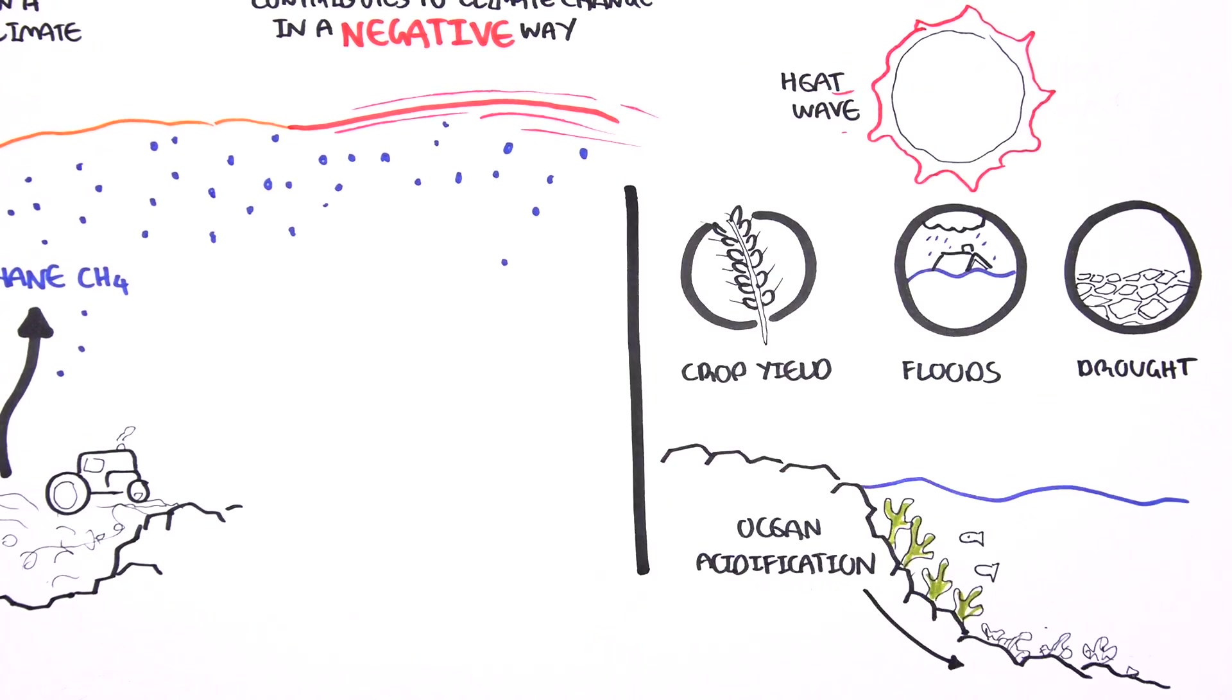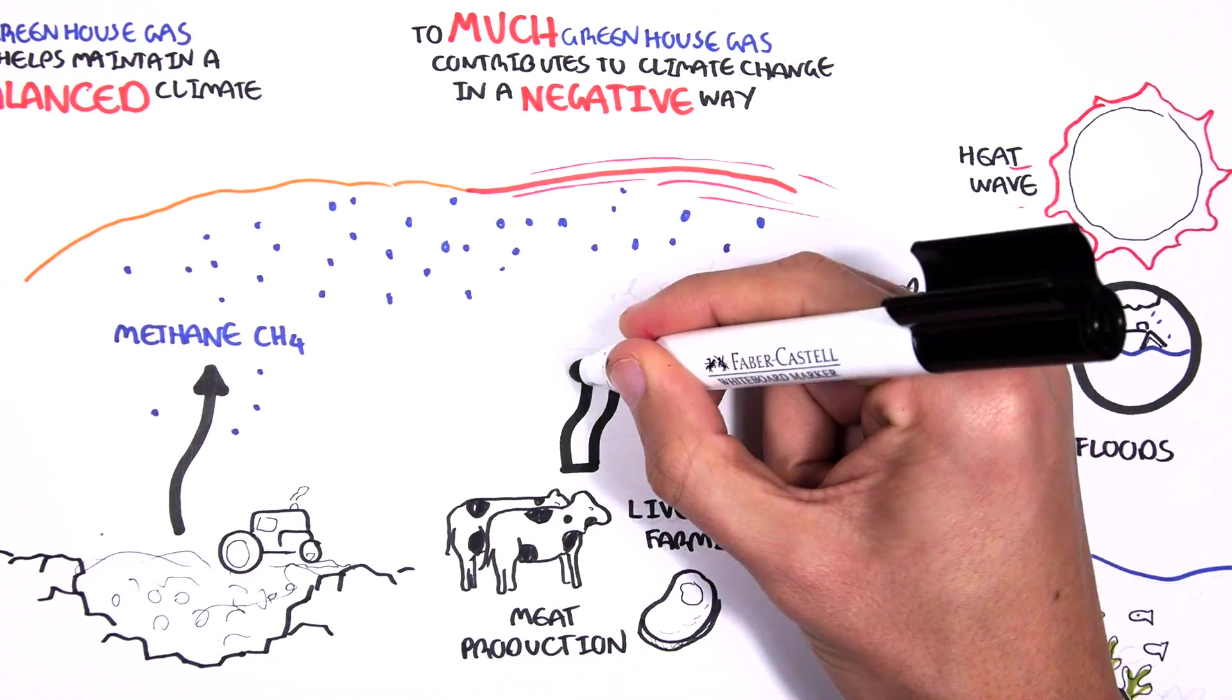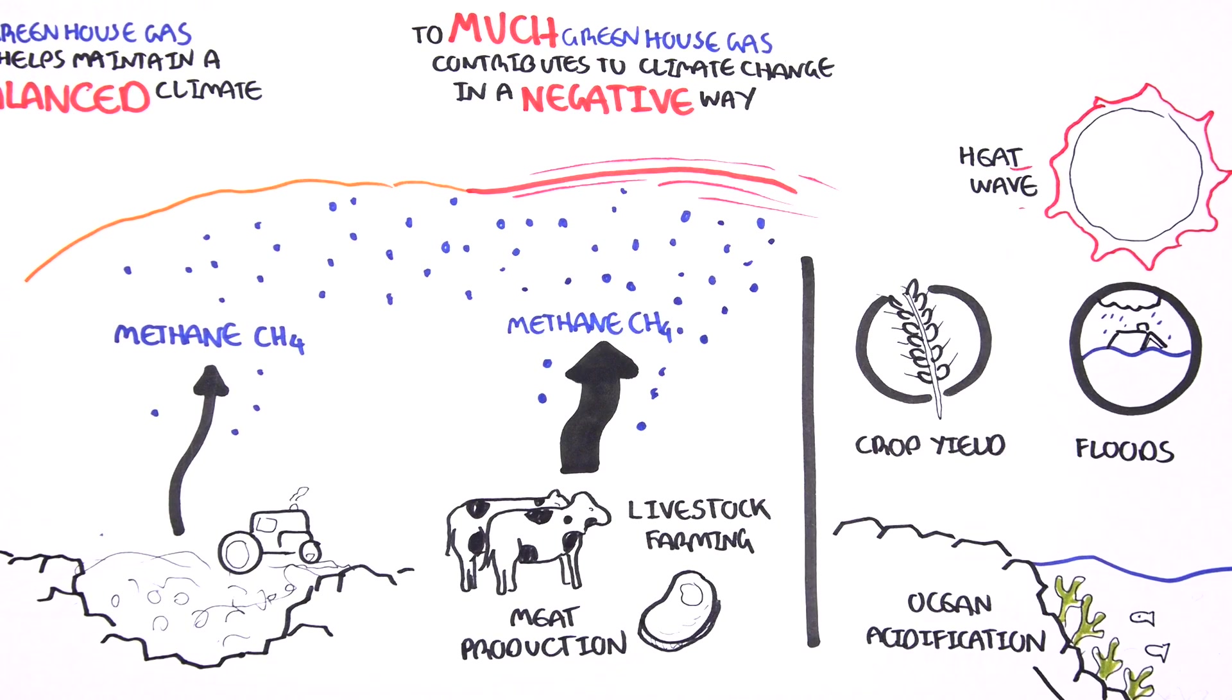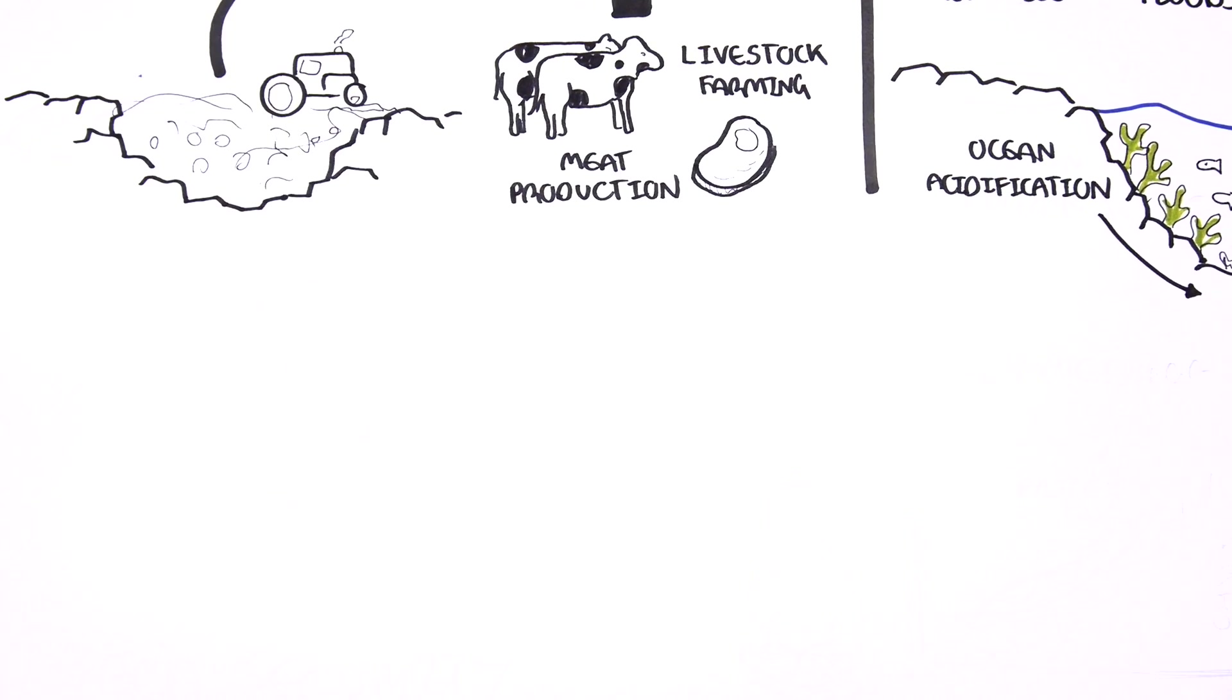Livestock farming or meat production is one of the greatest contributors of methane gas in our environment. The increased demand for meat results in an increase in livestock and so greenhouse gases.